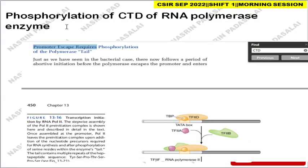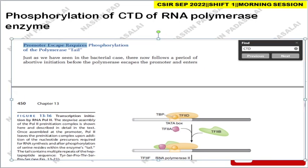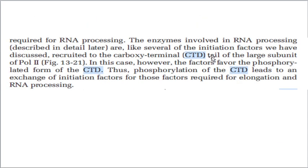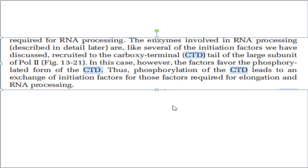The next question concerns phosphorylation of the CTD of RNA polymerase. You can refer to James T. Watson's book, which mentions that promoter escape requires phosphorylation of the polymerase stalk. Eukaryotic promoter escape involves two important steps not seen in bacteria: ATP hydrolysis and phosphorylation of the polymerase. The largest subunit of RNA polymerase has a carboxy-terminal domain consisting of repeated heptapeptide sequences of tyrosine-serine-proline-threonine-serine-proline-serine. Each repeat contains a site for phosphorylation by specific kinases. Phosphorylation of this CTD leads to exchange of initiation factors for those required for elongation and RNA processing.